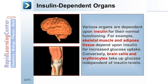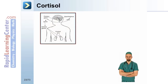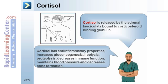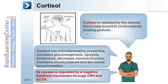Various organs are dependent upon insulin for their normal functioning. Skeletal muscle and adipose tissue depend upon insulin for increased glucose uptake. Conversely, brain cells and erythrocytes take up glucose independent of insulin levels. Cortisol is released by the adrenal fasciculata, bound to corticosteroid binding globulin. Cortisol has anti-inflammatory properties, increases gluconeogenesis, lipolysis, and proteolysis, decreases immune function, maintains blood pressure, and decreases bone formation. Its release is regulated by a negative feedback mechanism through CRH and ACTH.